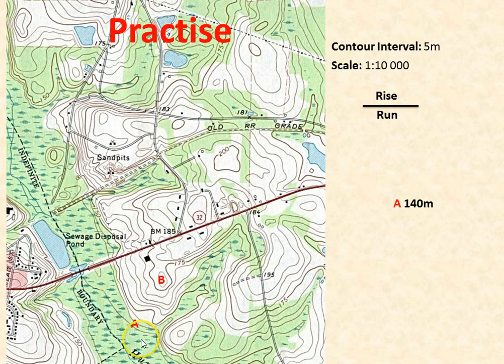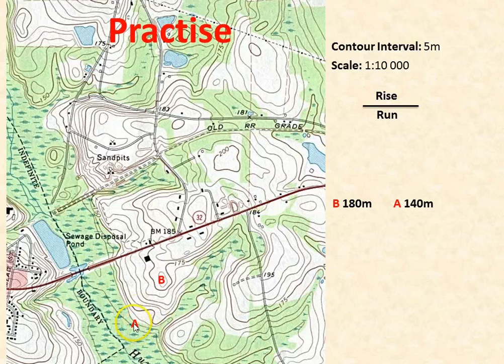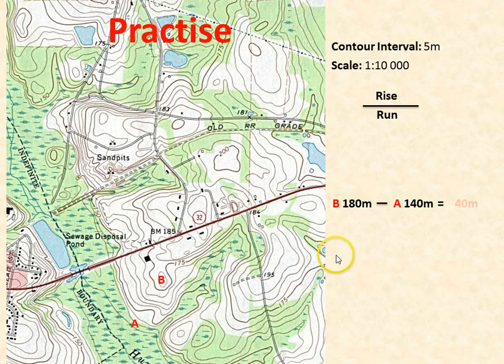So 140 is where A is. Coming up to B, we have the index line at 175, and going 5 metres up gives us 180. To find how high we've gone from A to B, we simply subtract the height of A from the height of B — 180 minus 140 — which equals 40. So our rise is 40 metres.